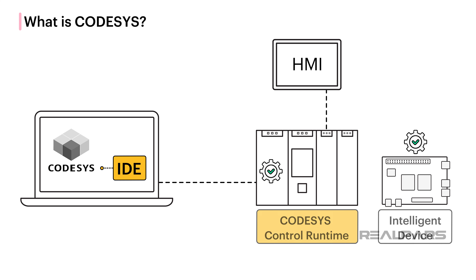By partnering with Codesys, PLC manufacturers can focus on their core competency of building innovative PLC hardware, and leave the software development to Codesys, who specialize in developing control software. This reduces cost for the manufacturer to develop PLC product lines. Those reduced costs lead to higher profits for the manufacturer, and some of the savings can be passed on to OEMs and end-users. By learning Codesys, PLC programmers can learn how to use the Codesys Development System, and use those skills to develop control applications for any Codesys-compatible PLC. This makes a programmer's PLC programming skills more transferable, and reduces the need for retraining when moving from one job to the next.